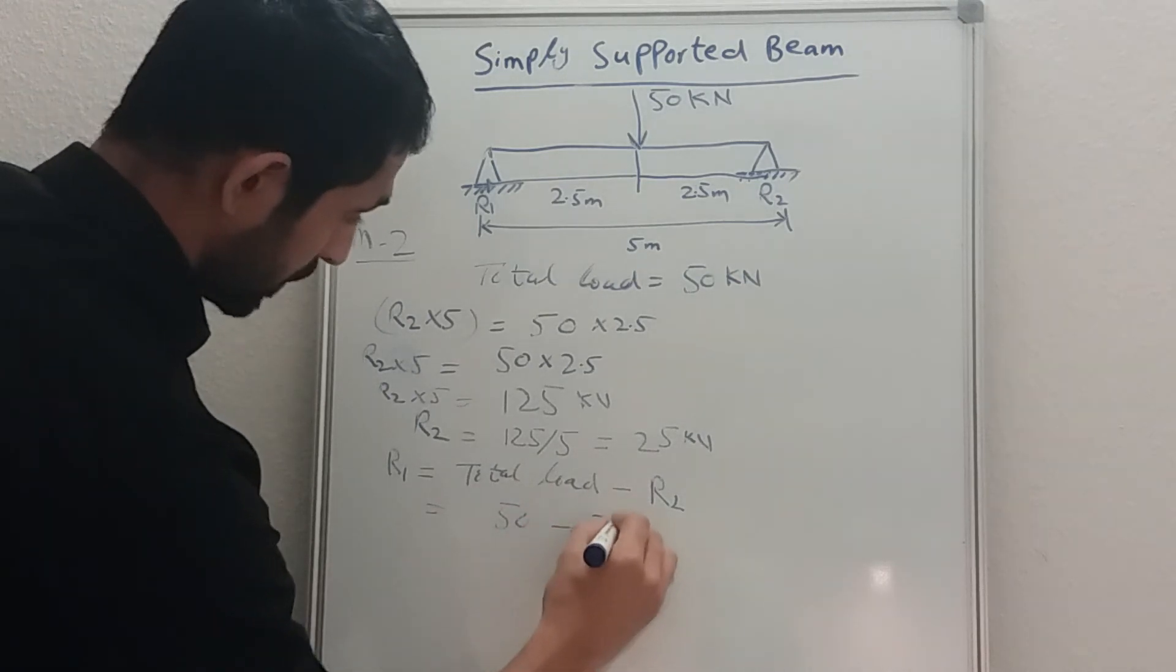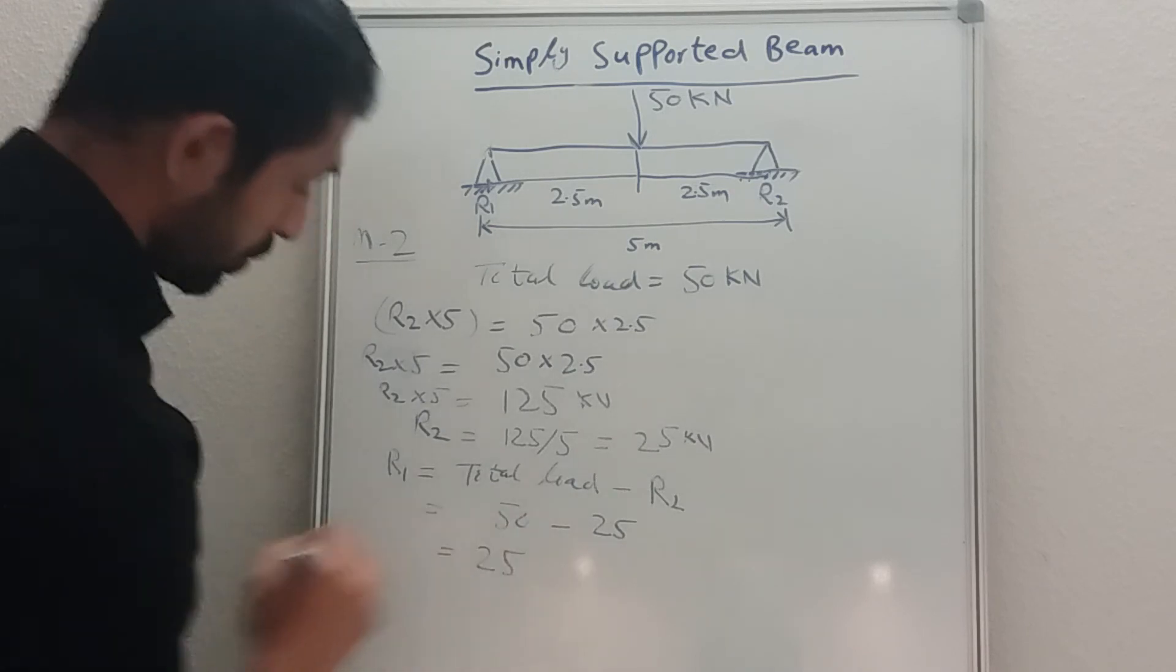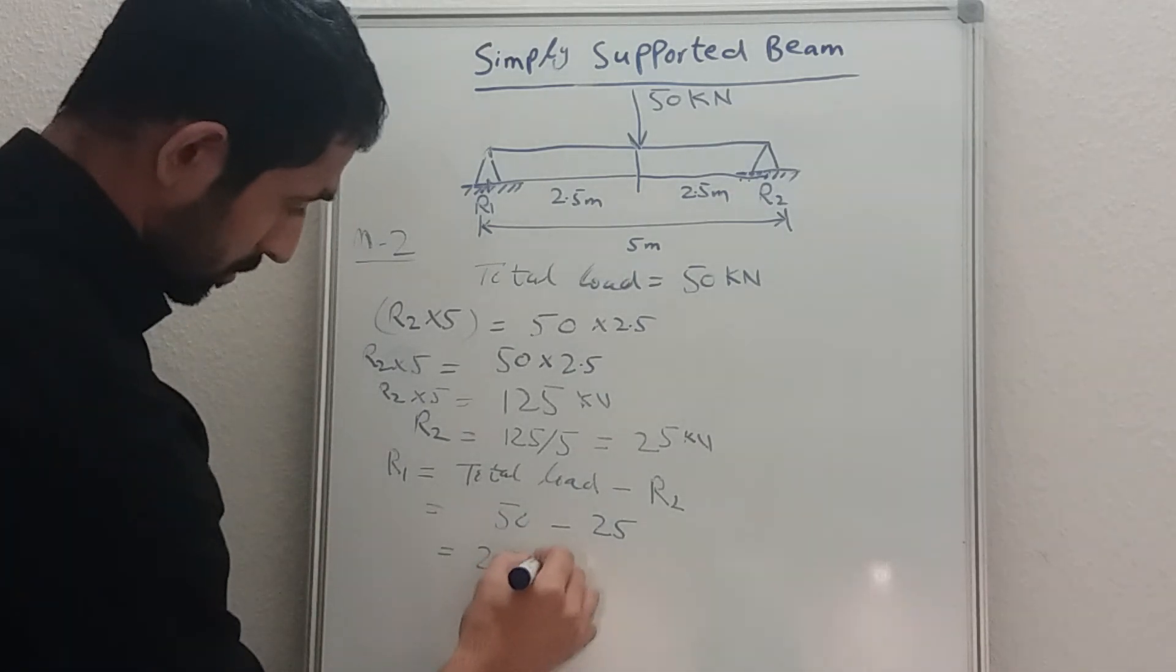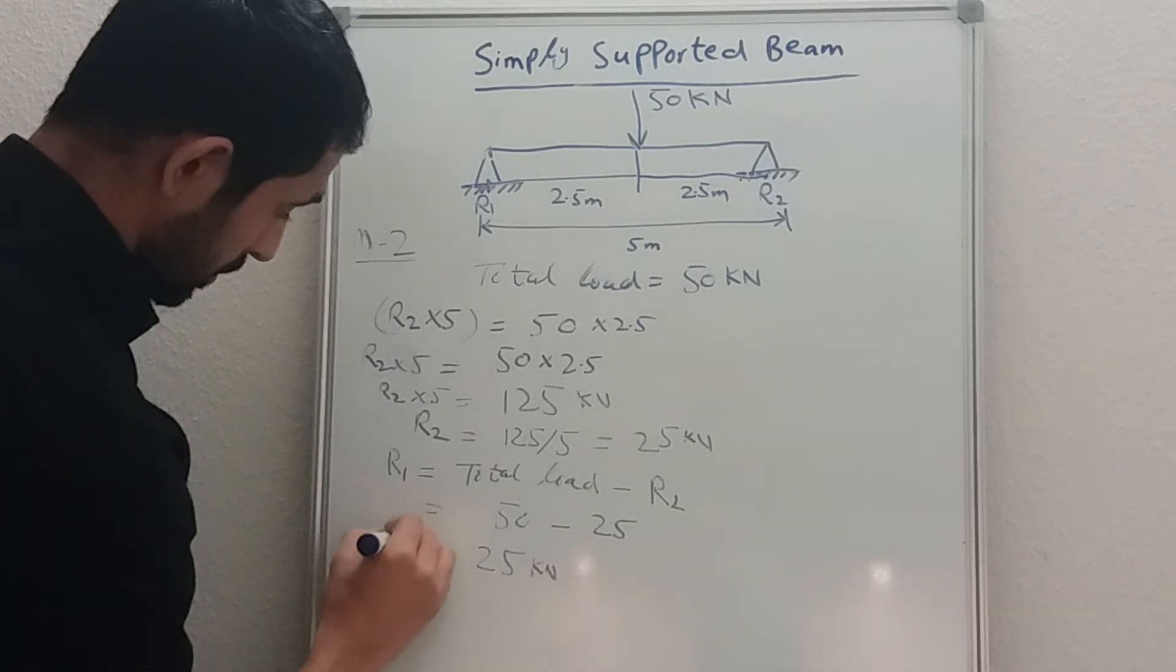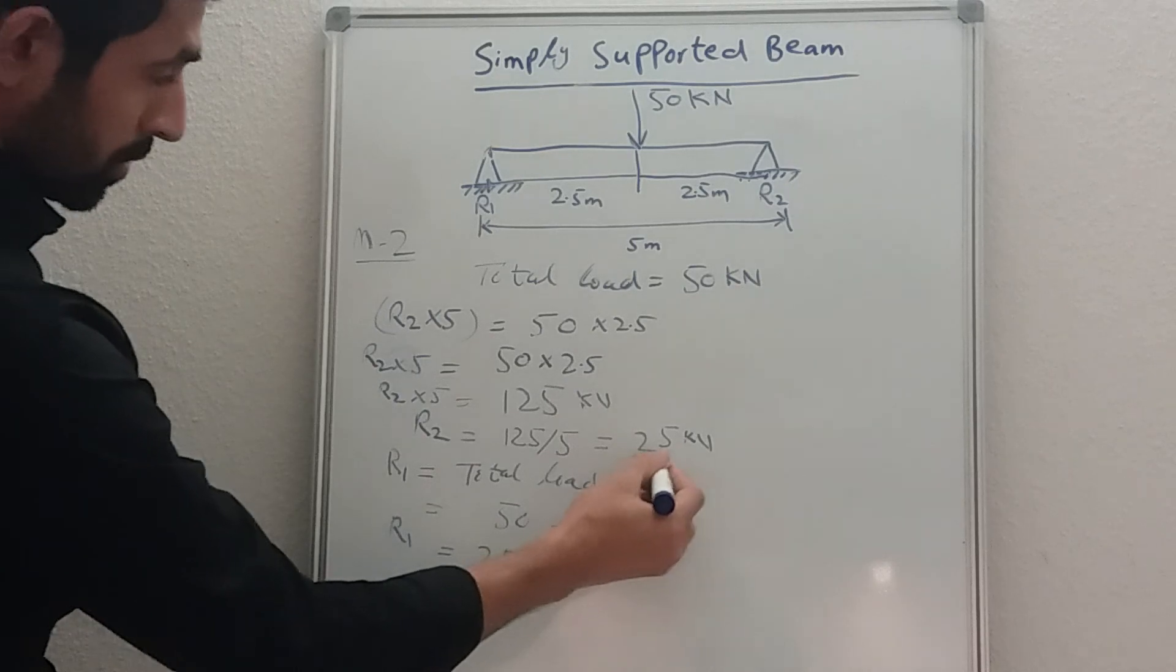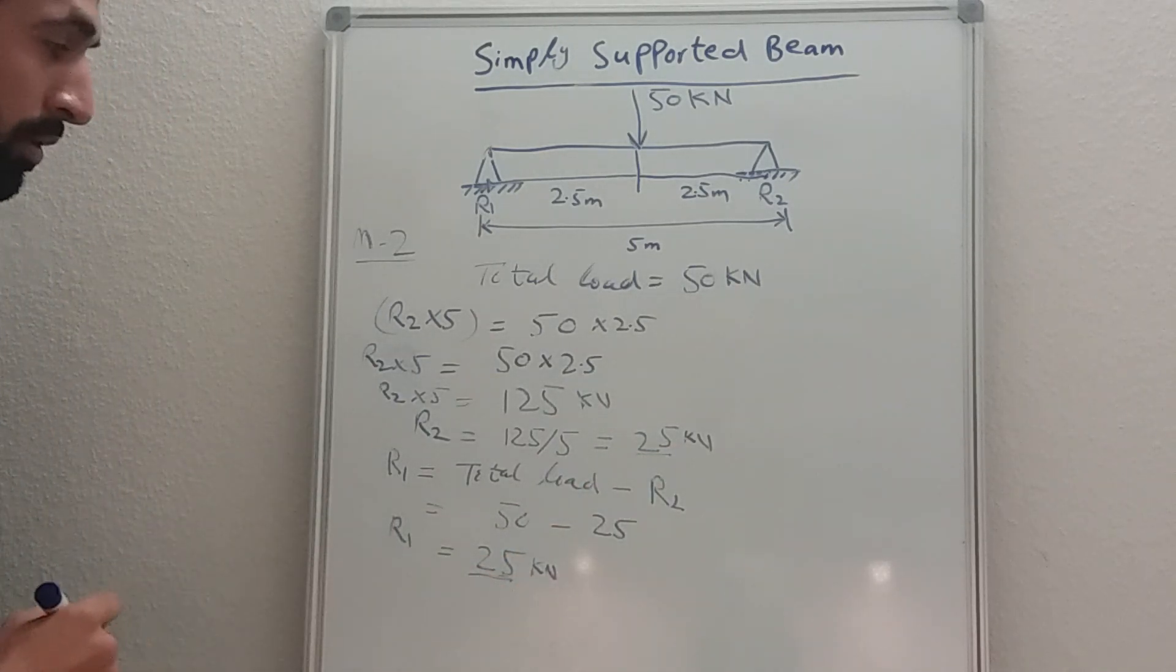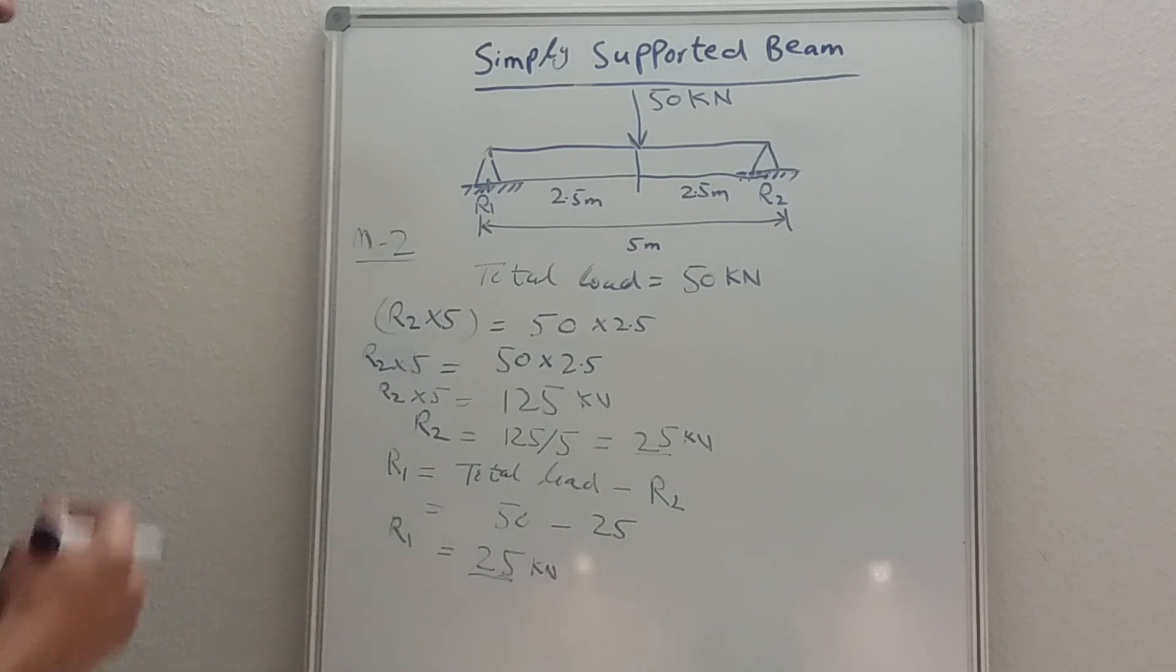So the answer would be 25 kilonewton. R1 is equal to 25, so R2 has 25 kilonewton and R1 has 25 kilonewton as well. So this is a simply supported beam, this is how you can calculate the reactions.